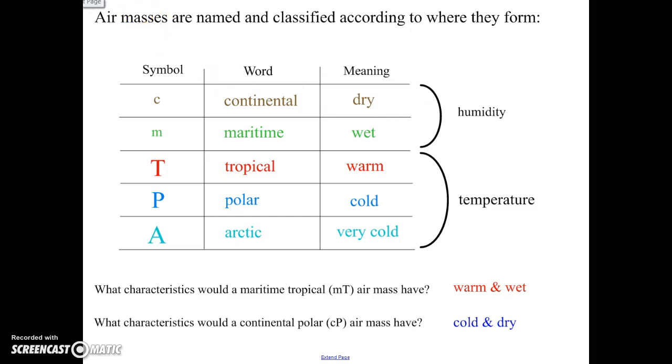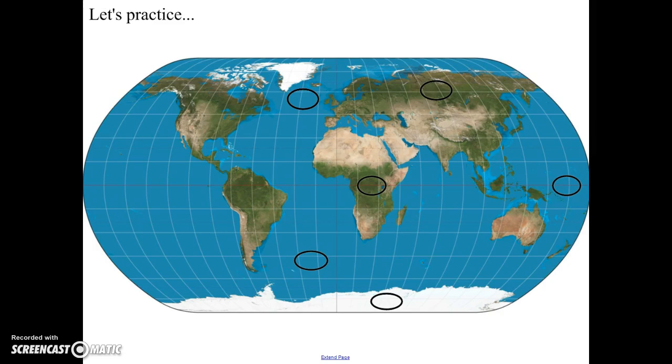So let's practice this a little bit. Let's take a look at this map. Inside each of these ovals, we're going to see if we can name the air mass that would form there.